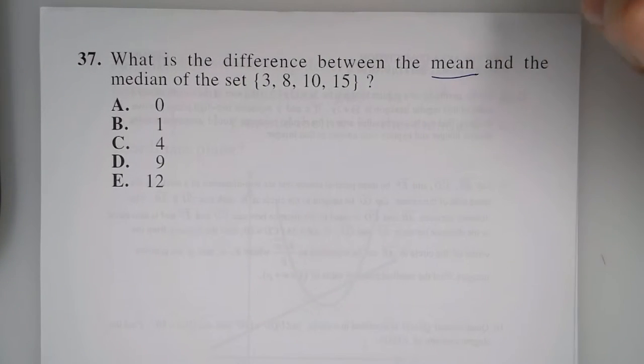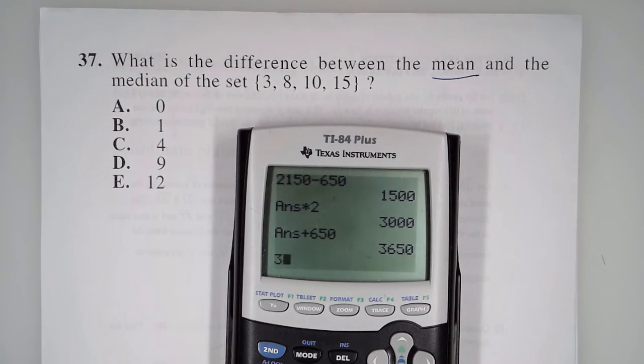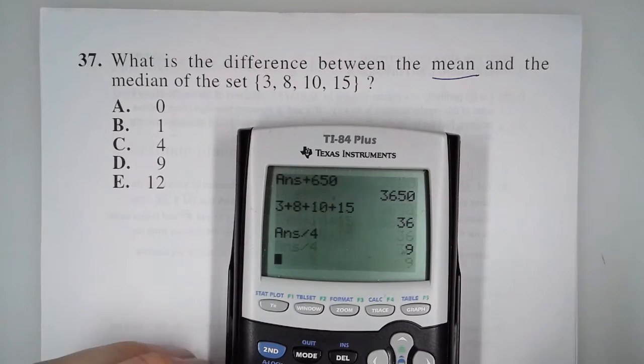Now, the mean is just the average. That means we add these four numbers and divide by 4. So 3 plus 8 plus 10 plus 15 divided by 4 is 9.